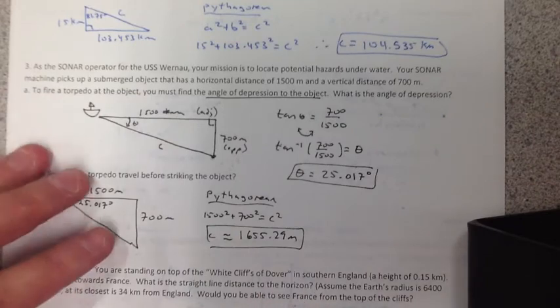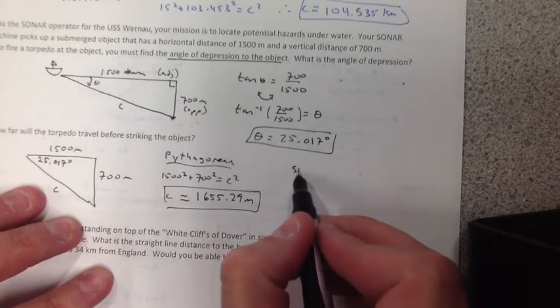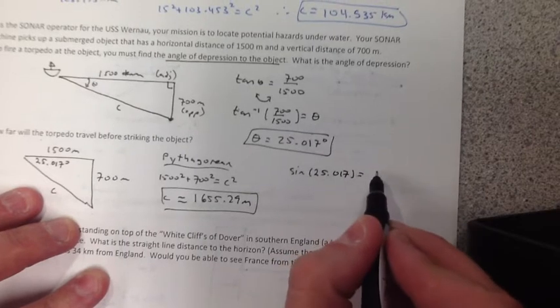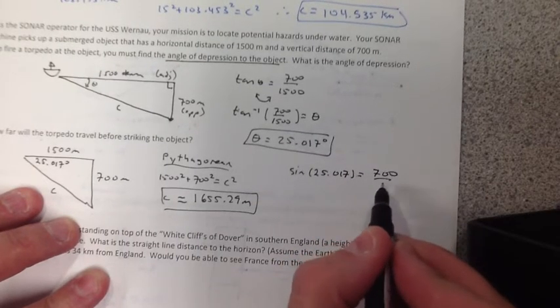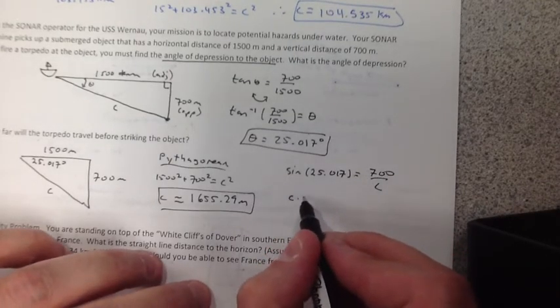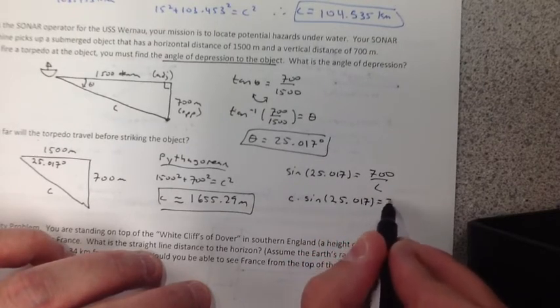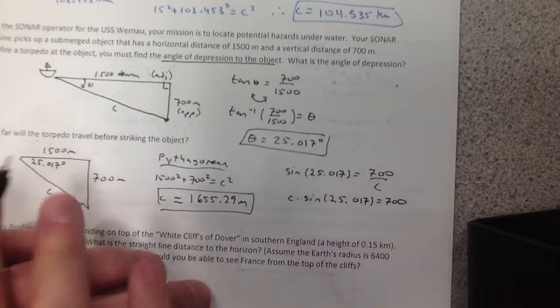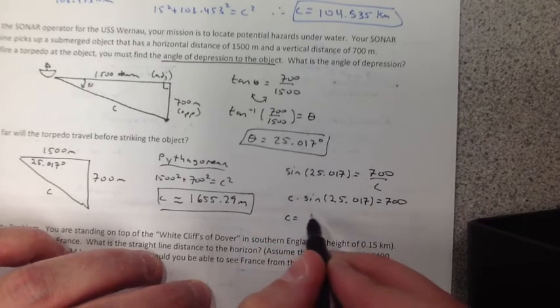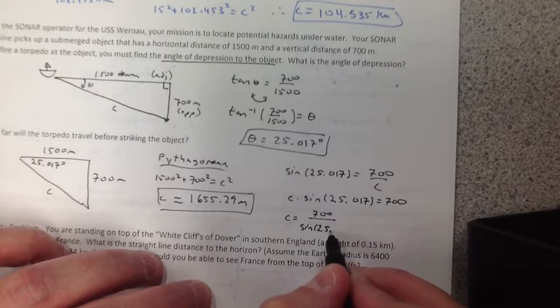But there are other ways you can do it too if you want to be fancy. You can use your trig values. For example, I could use sine of my angle. The sine of 25.017 equals the opposite 700 over C. I can use my sine value. Cross multiply. I get C times the sine of 25.017 equals 700. You want to copy this down because there are going to be some problems in your homework where you actually have to do this.